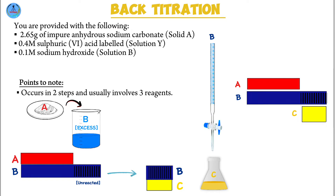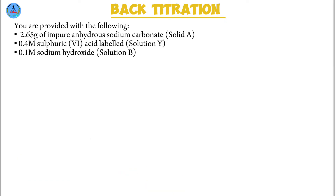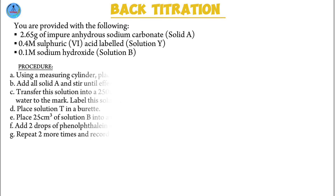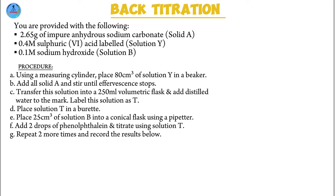In this question, we have solid A containing 2.65 grams of impure anhydrous sodium carbonate — an impure substance, which is why we carry out back titration. When dealing with an impure substance, we will be asked for the percentage purity at the end. We have three reagents: solid A (impure anhydrous sodium carbonate), solution Y (0.4 molar sulfuric acid), and solution B (0.1 molar sodium hydroxide). I'm going to go through the procedure and illustrate it diagrammatically to help process the information better.